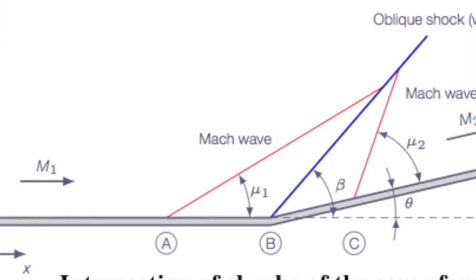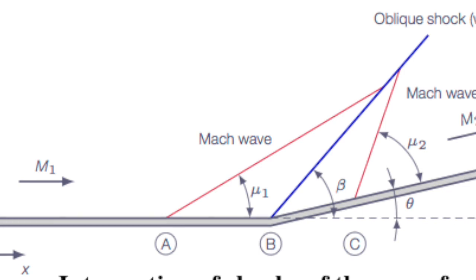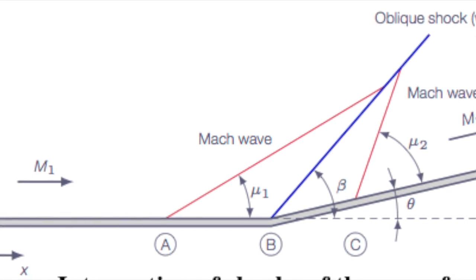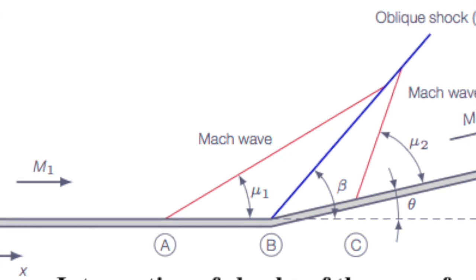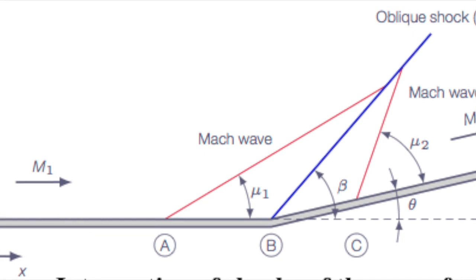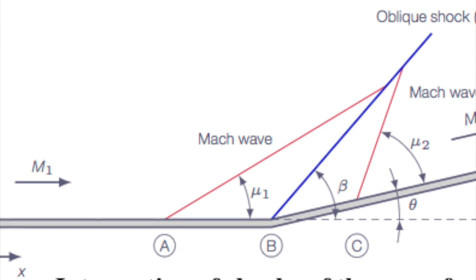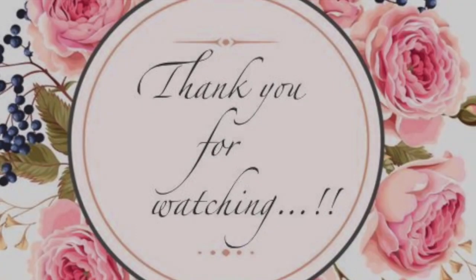Depending on the upstream conditions and theta 1 and theta 2, this reflected wave CE may be weak shock or expansion wave. Its purpose is to process the flow in region 4 such that P4 equals to P5 and theta 4 equals to theta 5 simultaneously, thus satisfying the necessary physical condition across the slip line.